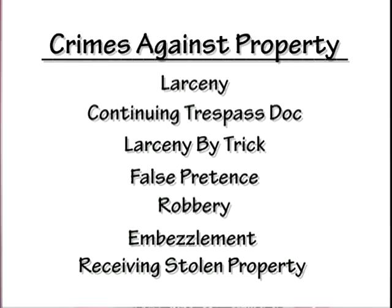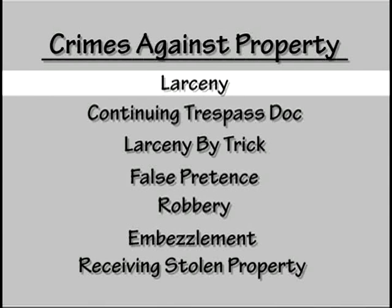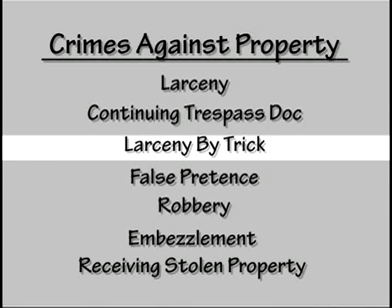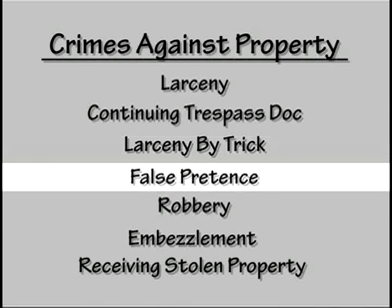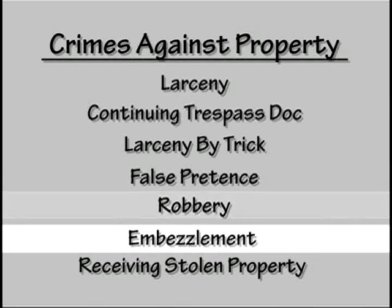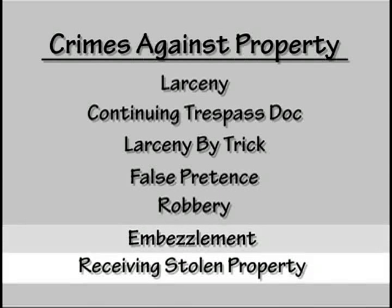To review the seven crimes against property once more: number one, larceny; two, continuing trespass doctrine; three, larceny by trick; four, false pretense; five, robbery; six, embezzlement; and seven, receiving stolen property.